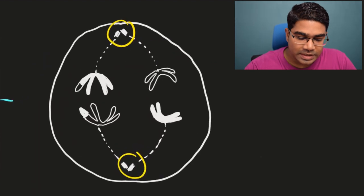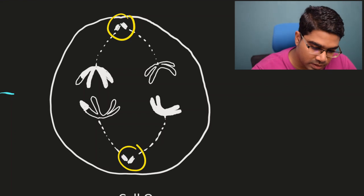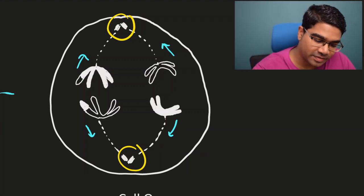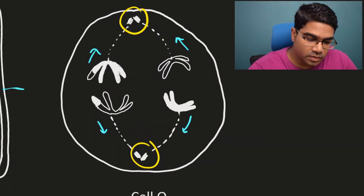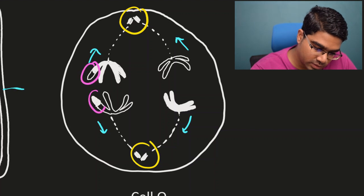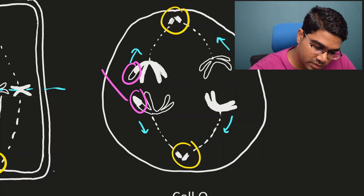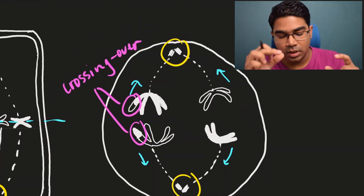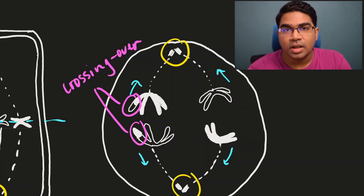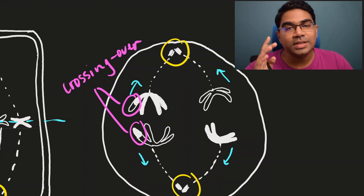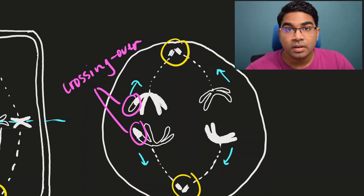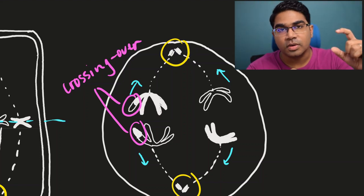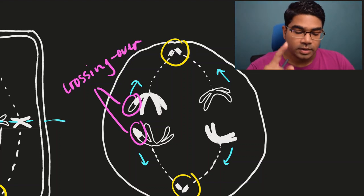Now let's look at cell Q. Whenever you see the chromosomes being pulled to the poles of the cell - these chromosomes are being pulled to two opposite poles - this is anaphase. However, this is not just any anaphase. If you look carefully, you will notice two different shades of color, which represents crossing over. Crossing over is an exchange of a part of the homologous chromosomes in prophase I of meiosis. This only happens for meiosis.